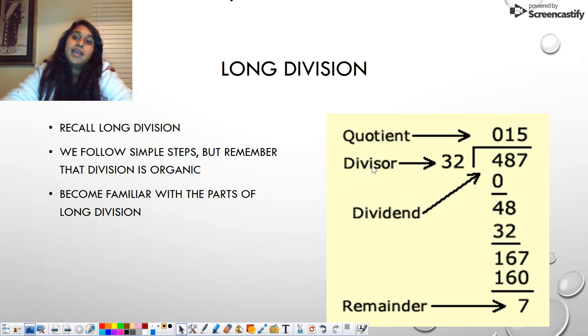The bigger thing to actually remember is what these parts are called. On the outside is what we call our divisor. What we are dividing into is the dividend. What our answer ends up being is the quotient. And if there's a number left over, that's the remainder.